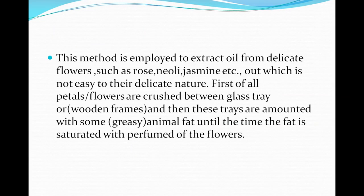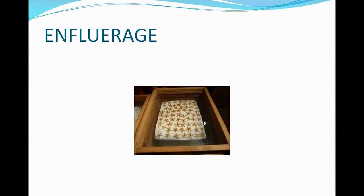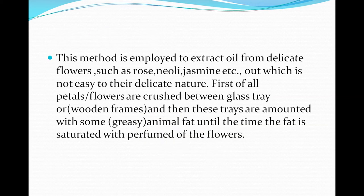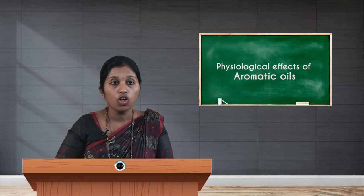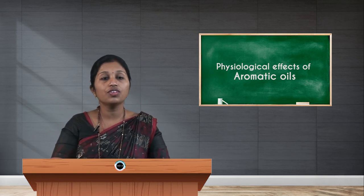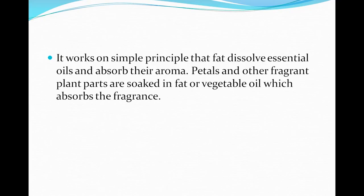The glass tray with crushed petals — for example, rose, neroli, or jasmine — is immersed in a wooden box filled with fat. After a few days, the flowers leave their extraction into the fat. This works on the simple principle that fat dissolves essential oil and absorbs their aroma. Petals and other fragrant plant parts are soaked in fat or vegetable oil, which absorbs the fragrance.